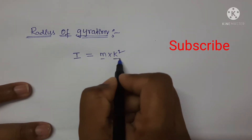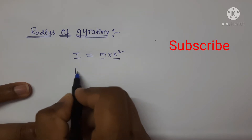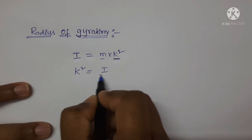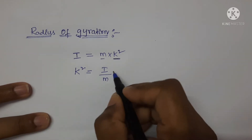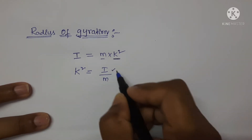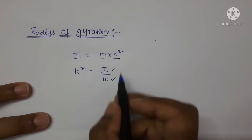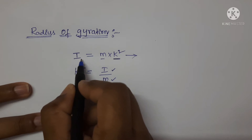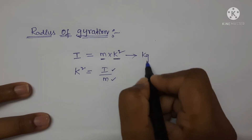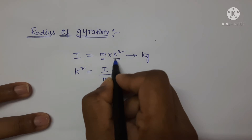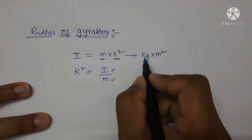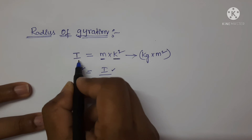We want to find the dimensions for radius of gyration. So, k squared is equal to I upon m. Now, let us write the SI unit for I and m. From here, we can write the SI unit for moment of inertia. Here, m is the mass, so kilogram, and k is the radius of gyration, so it is measured in terms of meter — meter squared. This is the SI unit for moment of inertia.